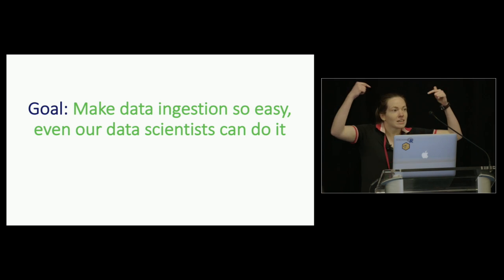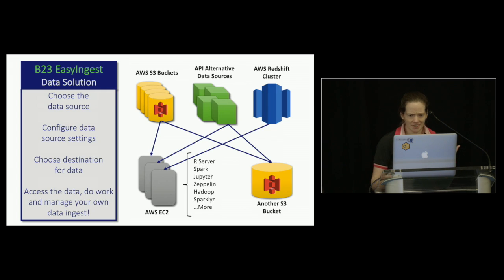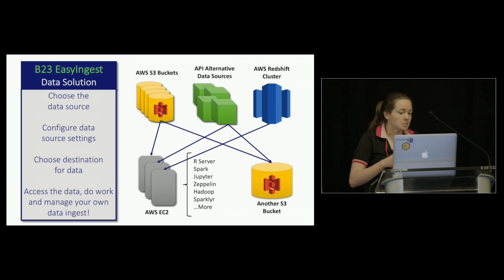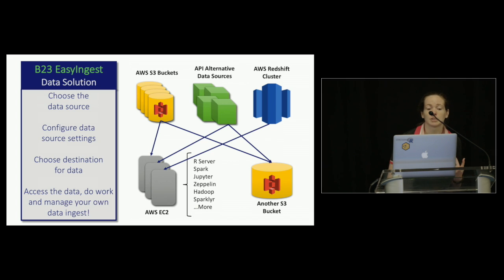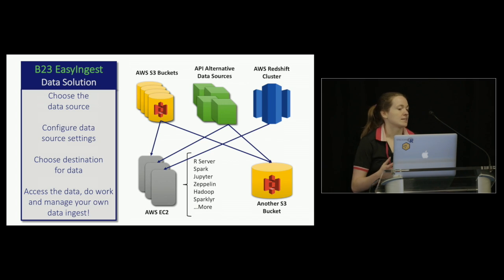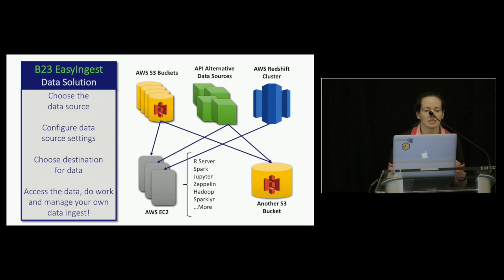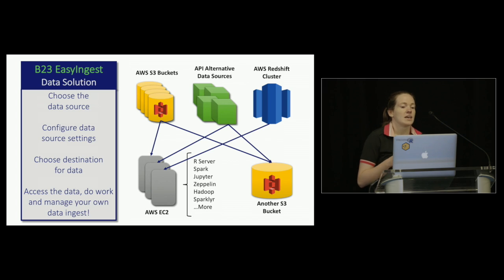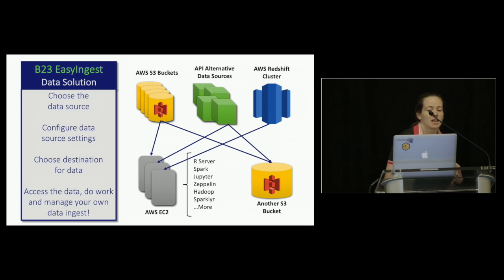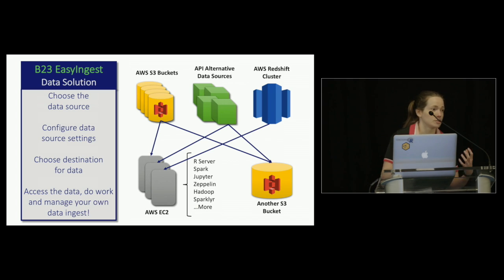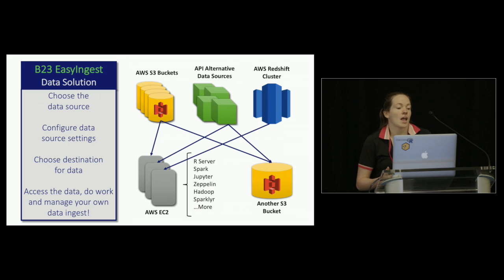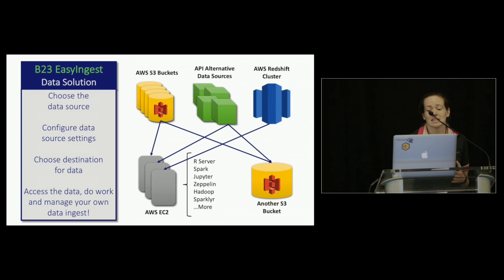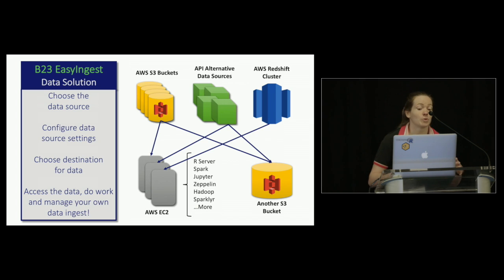Can we make it so easy that even a data scientist can do it? The answer ended up being yes — it took a little bit of engineering magic. We created a templatized process for setting up ingest pipelines into our tools. Now I, as a data scientist, can choose the data source I want — be that an S3 bucket, an API data source, or a Redshift cluster — configure some data source settings, choose the destination, usually our R server or SparklyR, and access the data I need without relying on anyone else on the team.